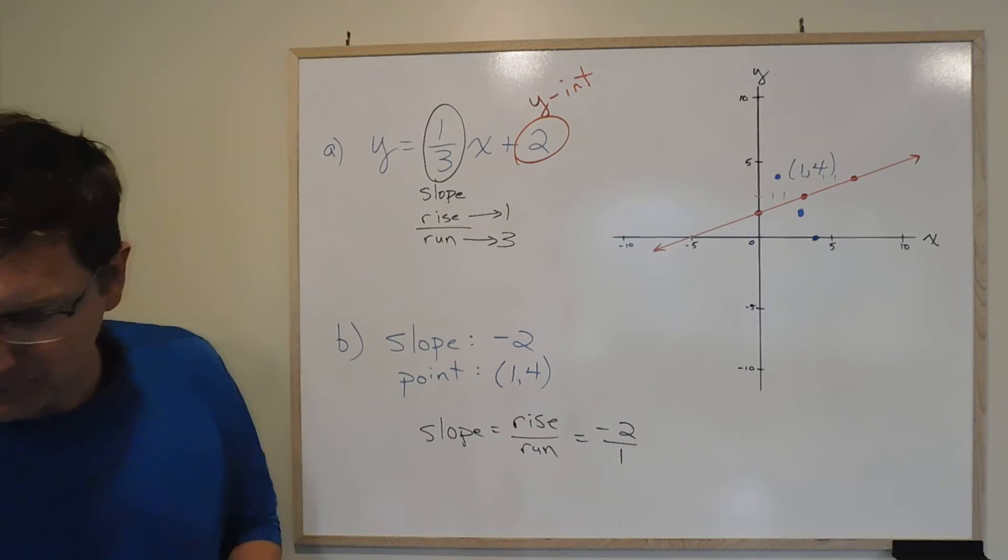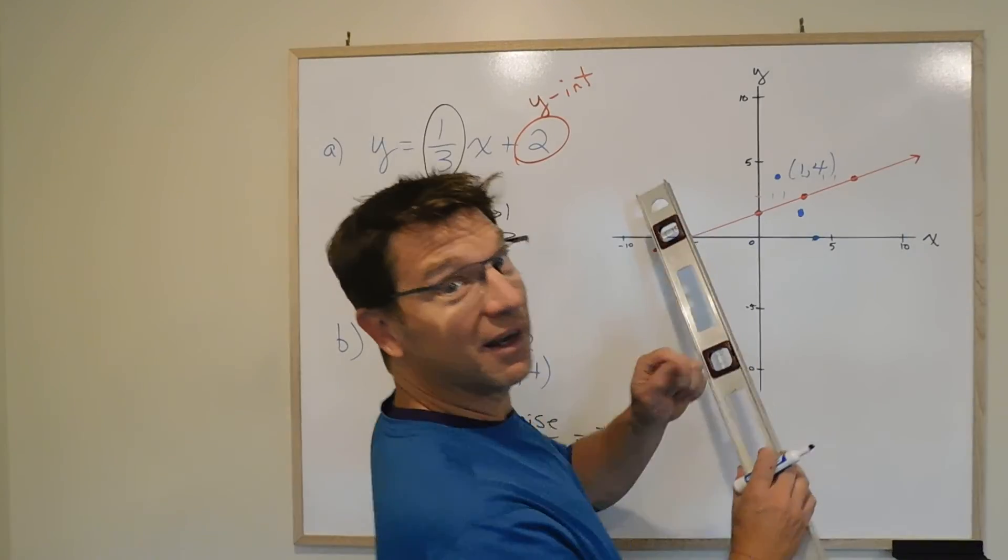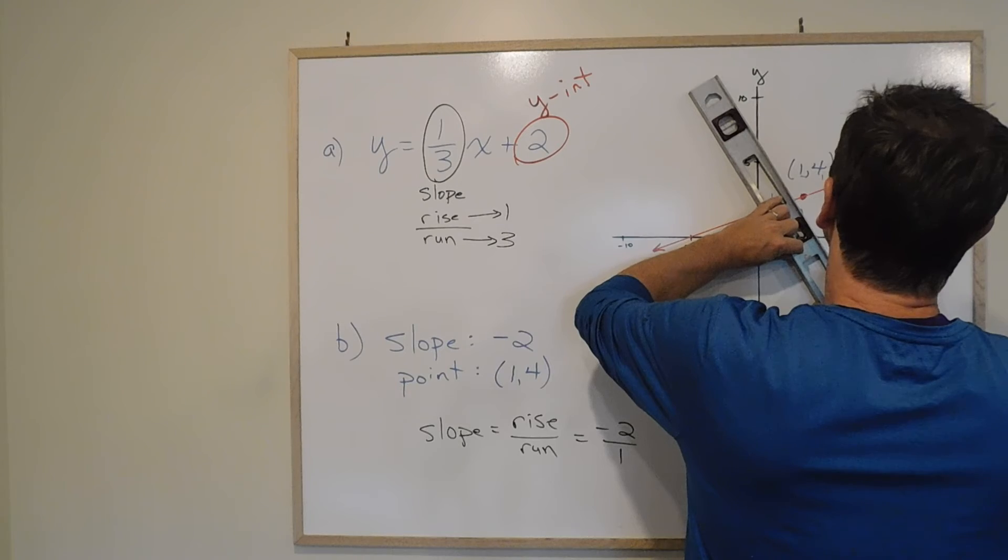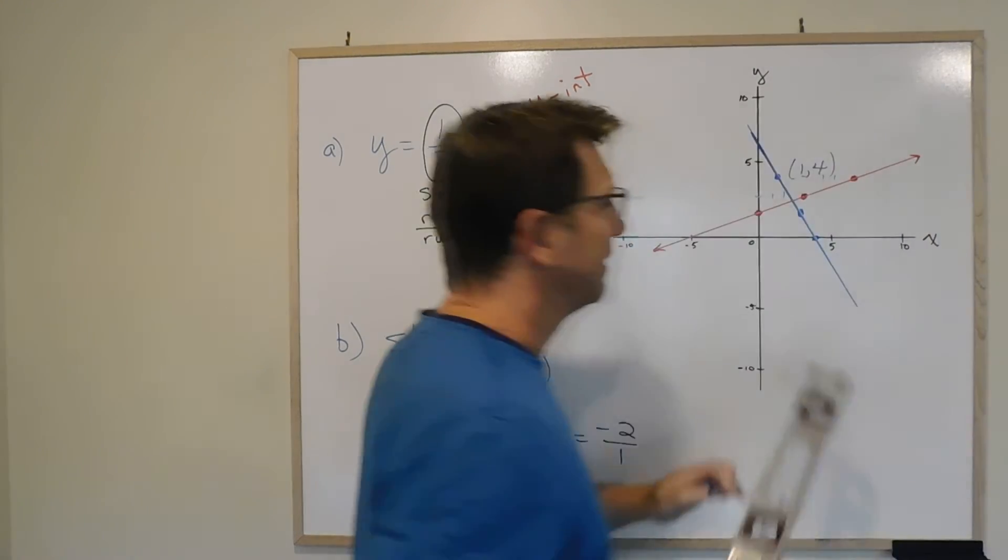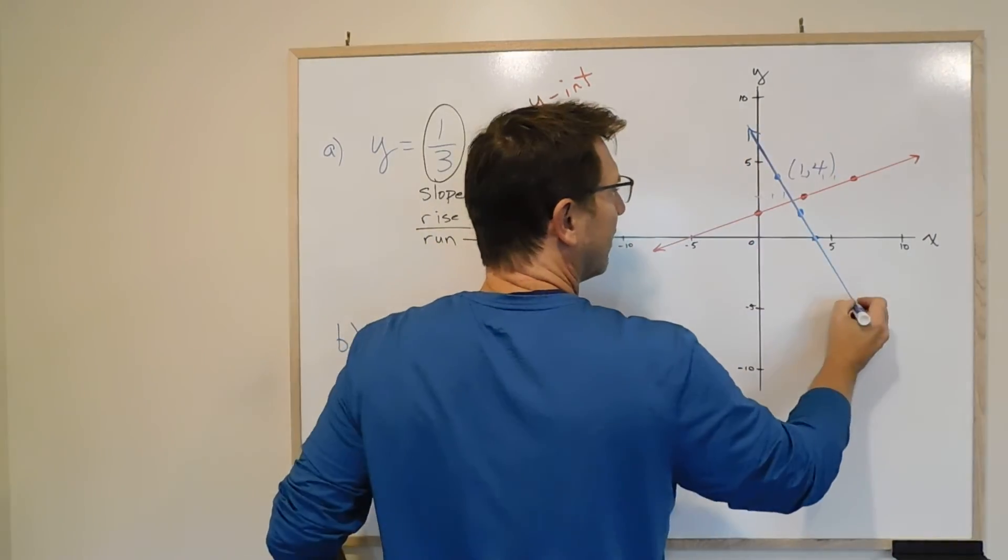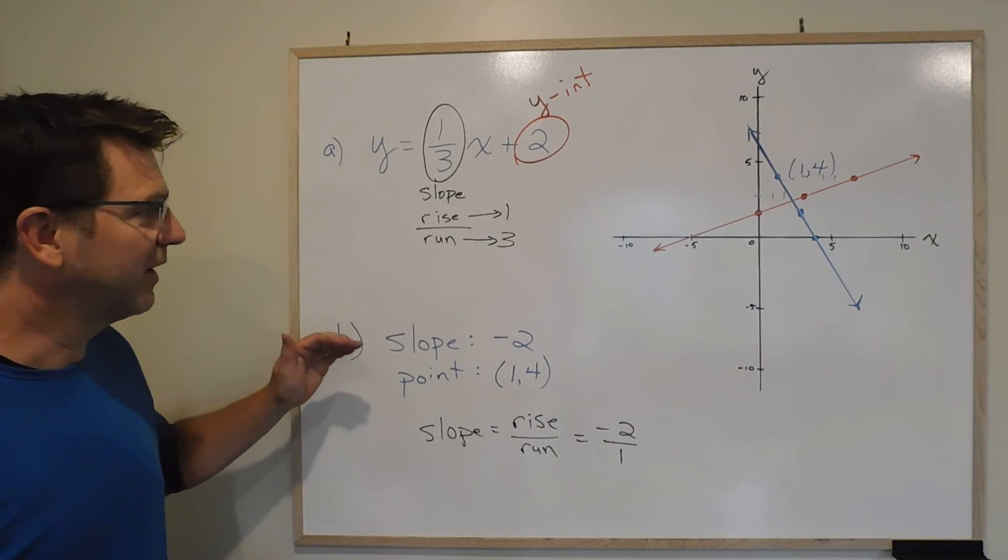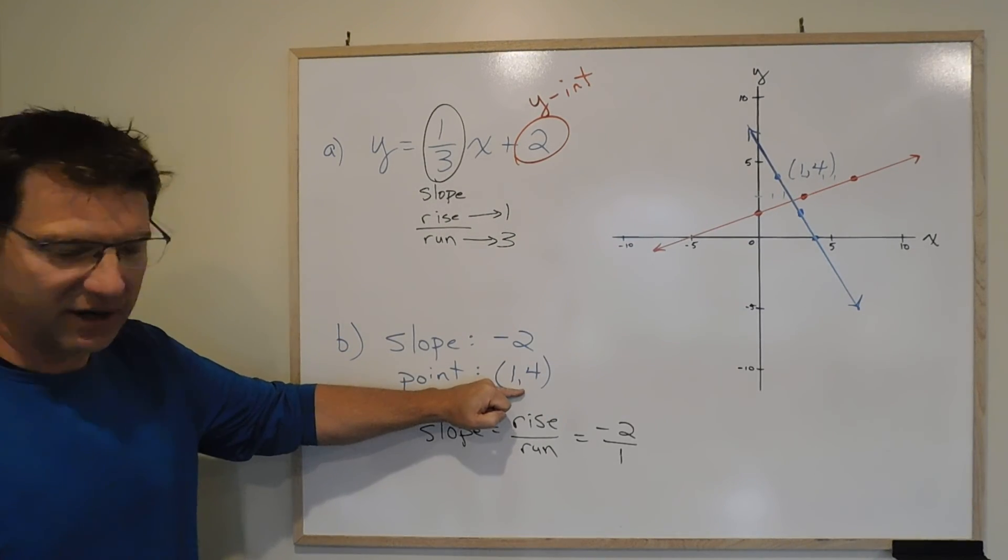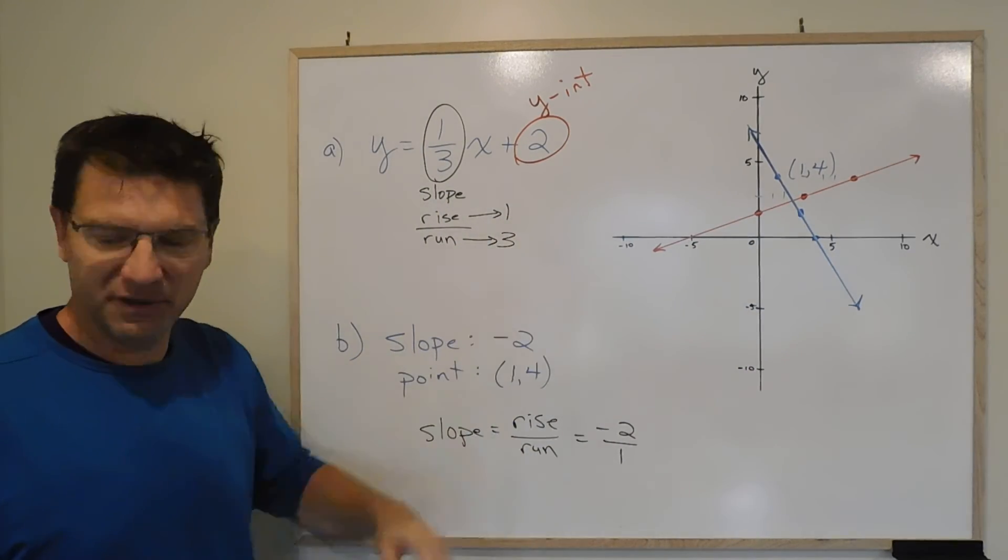And what I've done is I've got 3 points. Let's hope they line up because if they didn't, I made a mistake. Ah, they do. Woo! They line up nicely. So what I've done, now we put arrows on it. What I've done is I have created a graph based on the fact that I knew the point that we could start at, which was 1, 4. And I knew the slope. It allowed me to draw the graph.